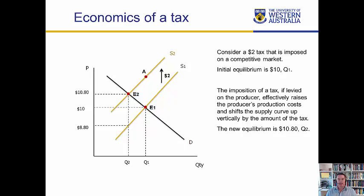Consumers will hand over $10.80 to producers, and the producers will have to pay the $2 tax to the government. At point Q2, $8.80 on the first supply curve is the new supply. Q2 is the new supply quantity and $8.80 is the amount the producer gets to keep after handing over the $2 tax out of the $10.80 selling price. So consumers are paying $10.80, but producers, after paying the tax, only get to keep $8.80.